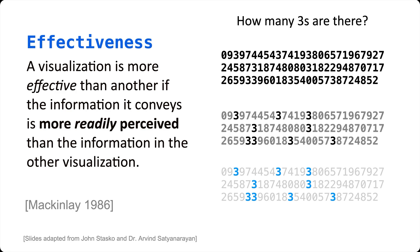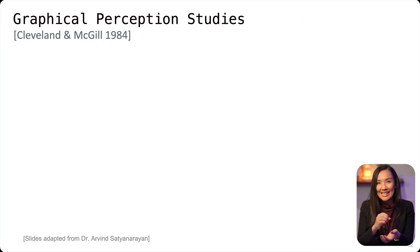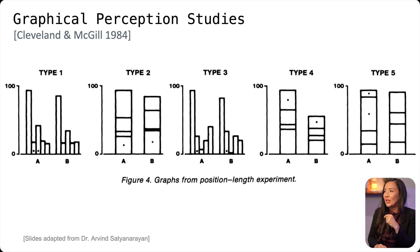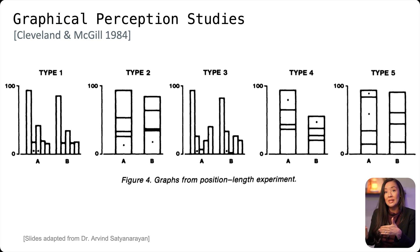That's kind of the baseline goal. We add on more goals after that — things like memorability, trust, how much it inspires people, etc. But at a baseline, we want visualizations to be easily and effectively perceived as quickly as possible. The field of data visualization has systematically evaluated virtually all of the different encoding types to determine which are more or less effective. I'm highlighting here the most famous study, probably, which is by Cleveland and McGill.